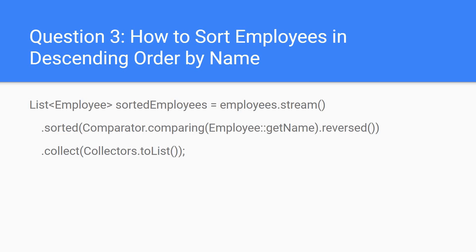Question 3: how to sort employees in descending order by name? Here is the code snippet. We have a list of employees, then we call list.stream() followed by sorted() — which is an intermediate operation. This intermediate operation is performed when we invoke a terminal operation. We use collect() because we want the output as a list. Inside sorted(), we use Comparator.comparing() with a method reference employee::getName, then call reversed() since it's a String. This collects the employee list in descending order by name.